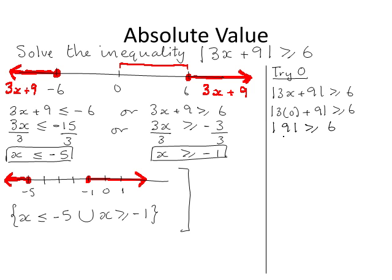The absolute value of 9 is the distance between 9 and 0 on the number line, which is 9. So we get 9 greater than or equal to 6, and this is a true statement, as expected, because 0 is part of the solution set.